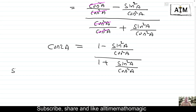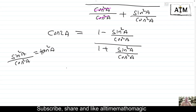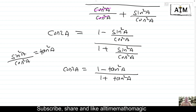This equals to tan square a. Therefore, cos 2a equals to 1 minus tan square a upon 1 plus tan square a. Thus, cos 2a equals to 1 minus tan square a upon 1 plus tan square a is proved.